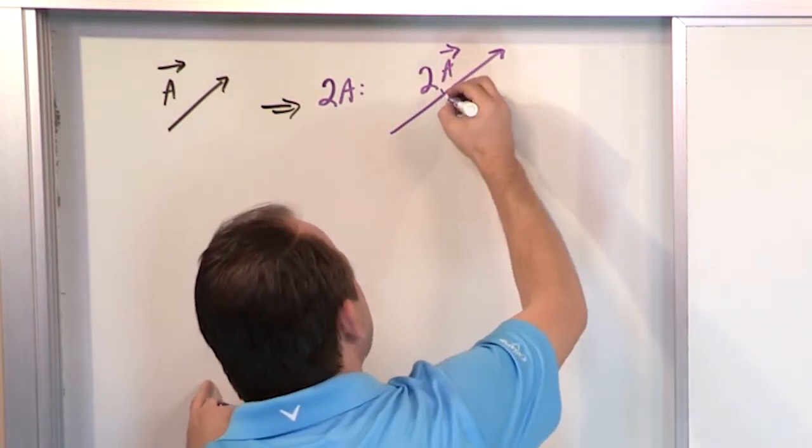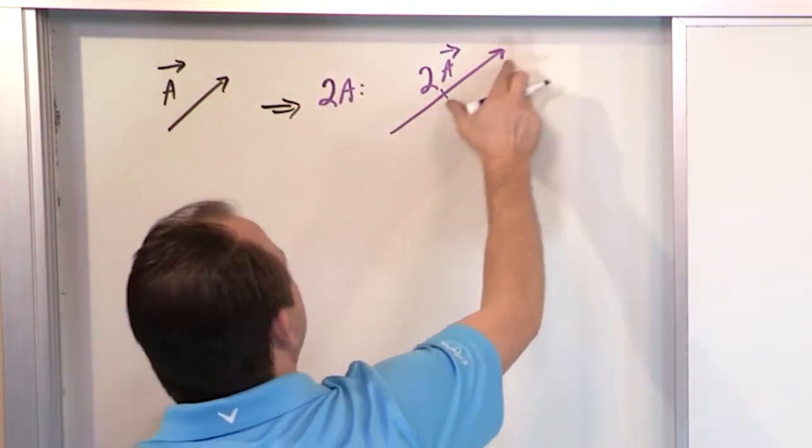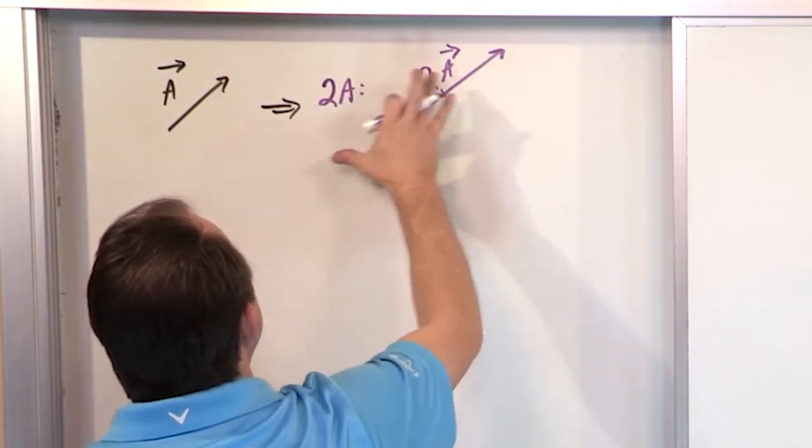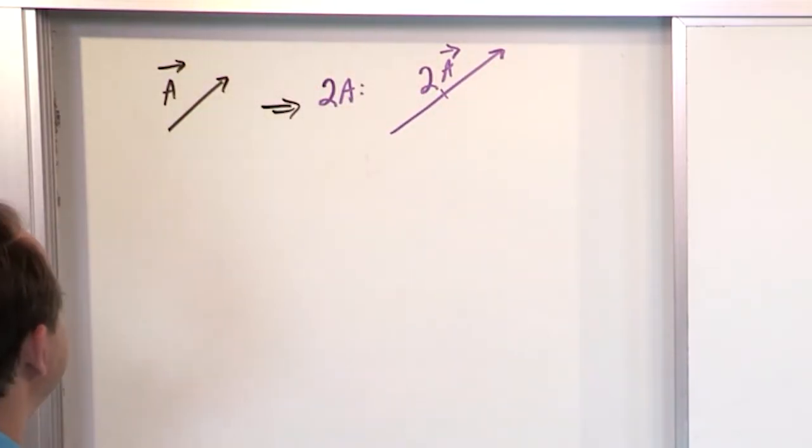And to help you, you could put a little tick mark in the middle. This is about the same as this and twice that I'm just doing that to help me judge the length of it. But this is the length of the vector. The total length is two times the length of that pointing in exactly the same direction.